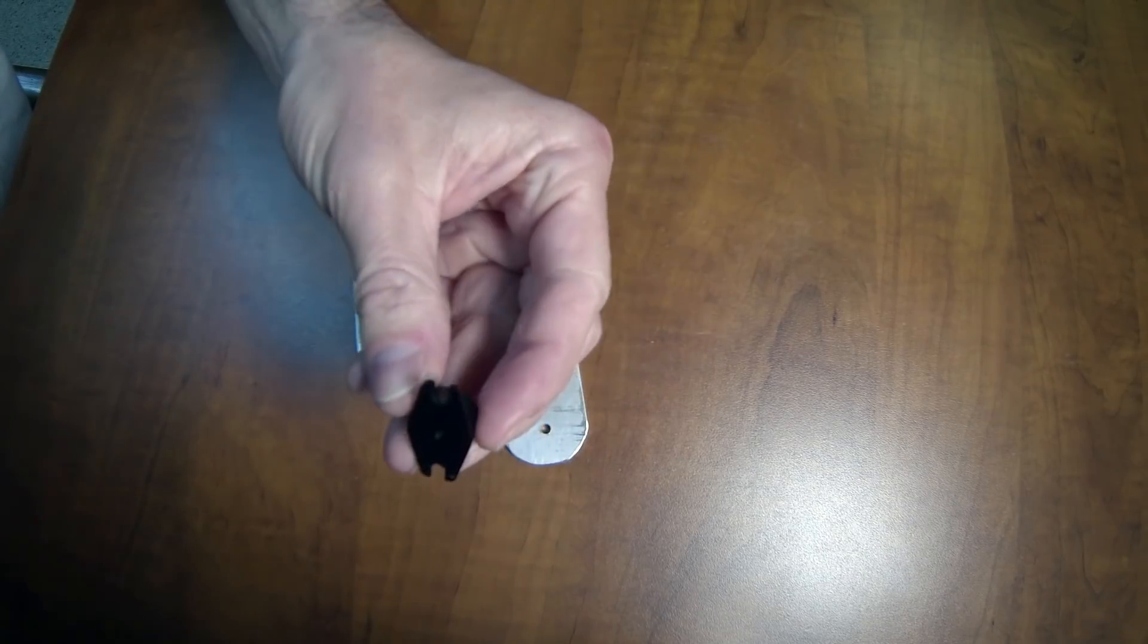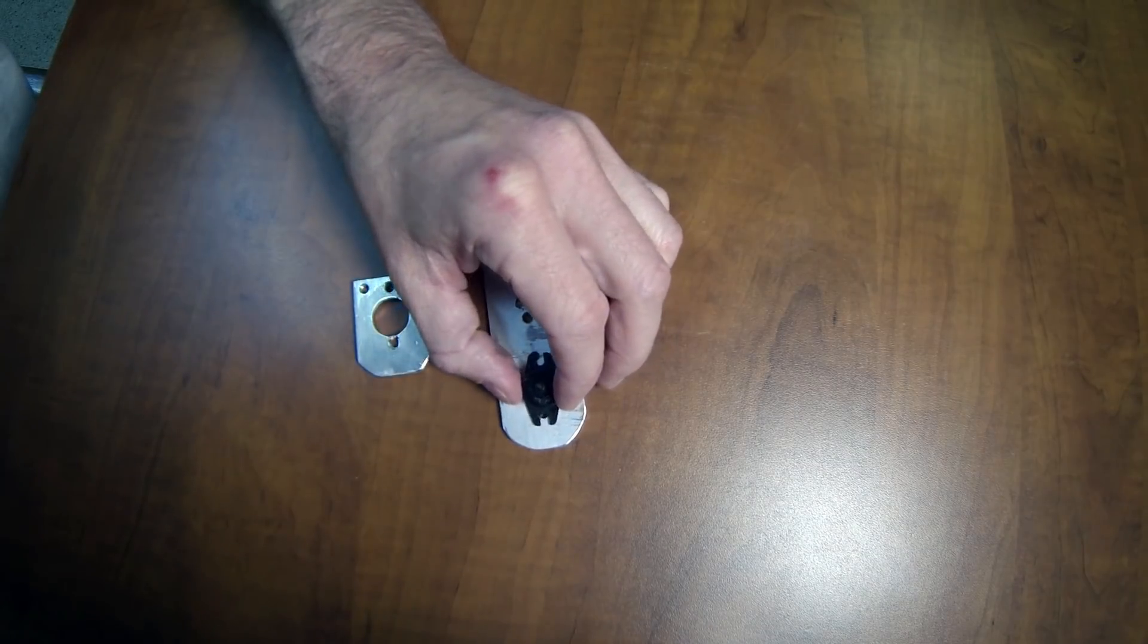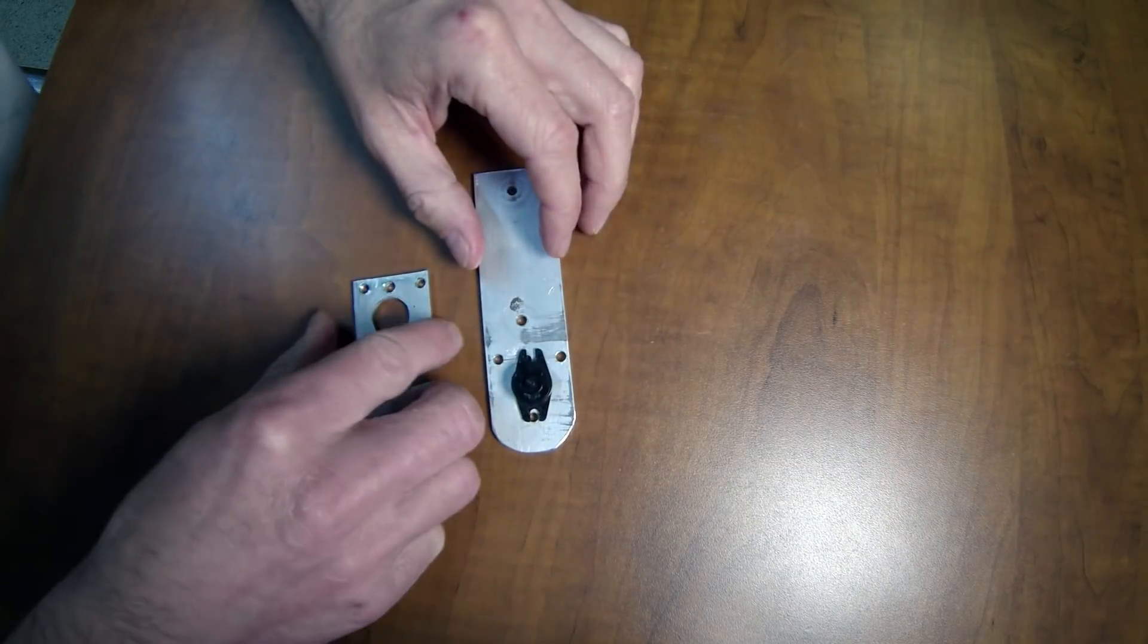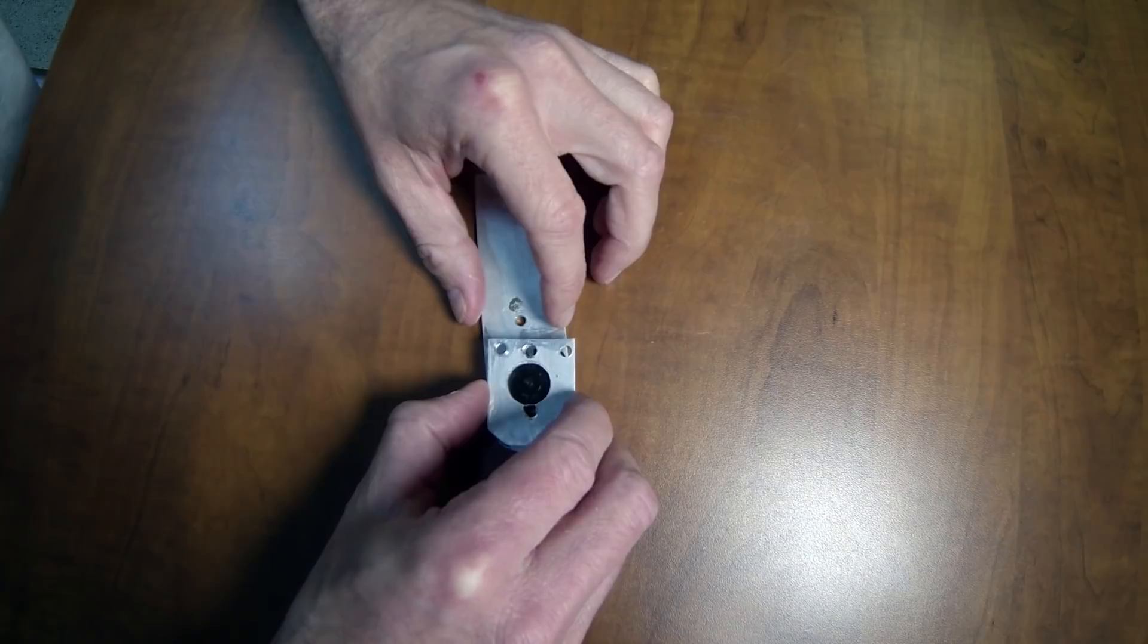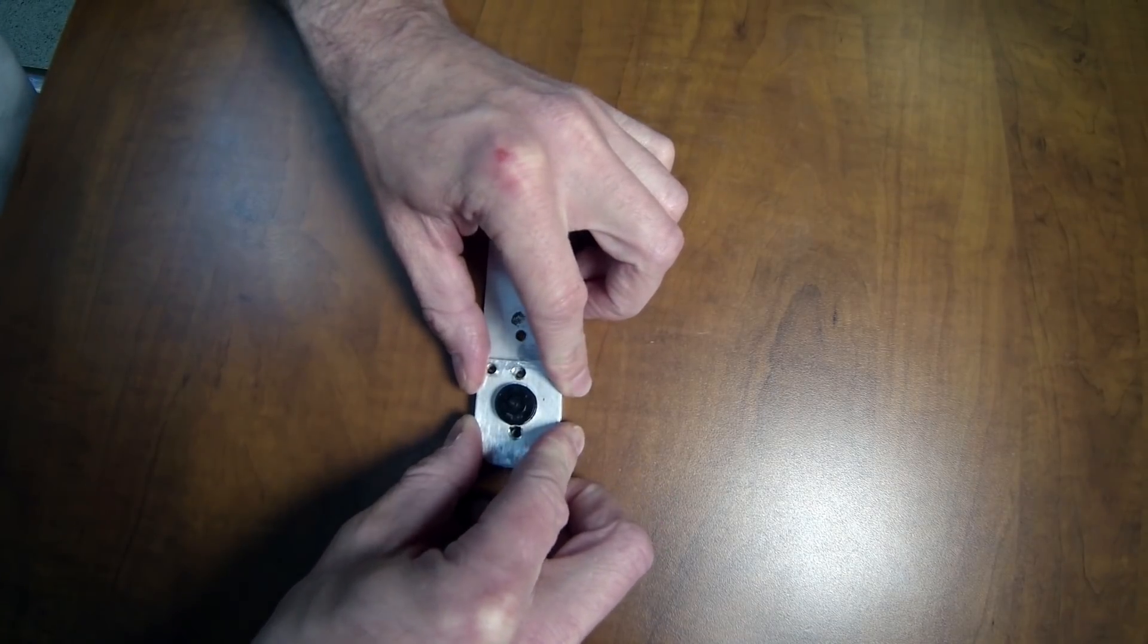The ears on here I was worried are kind of flimsy so I built this mount to sandwich it between two pieces of aluminum. So you can see this slides through like this and then that bolts together and sandwiches it.